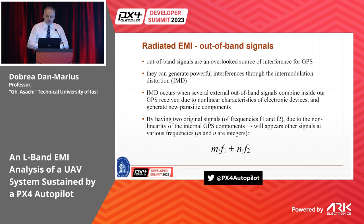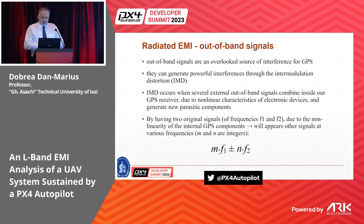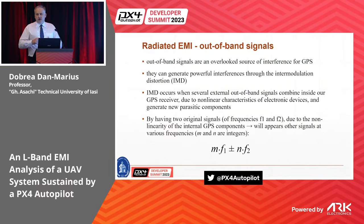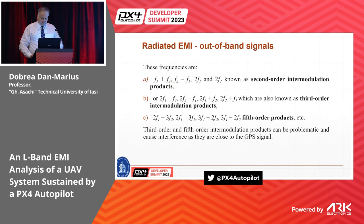Out-of-band perturbations are one of the sources not really taken into consideration, but they can generate powerful interferences, mainly through the intermodulation distortion mechanism. IMD occurs when several external out-of-band interference sources combine inside your GPS unit due to different kinds of nonlinearity that exist. In the end, you get a signal in your GPS unit's band that perturbs its function. You can have second-order, third-order, or fifth-order intermodulation.